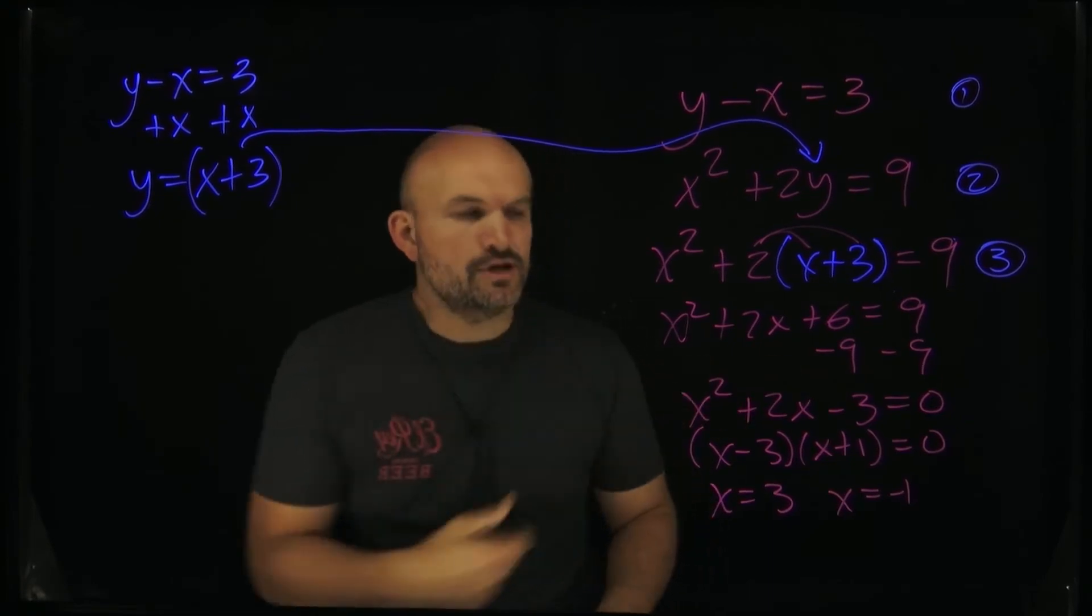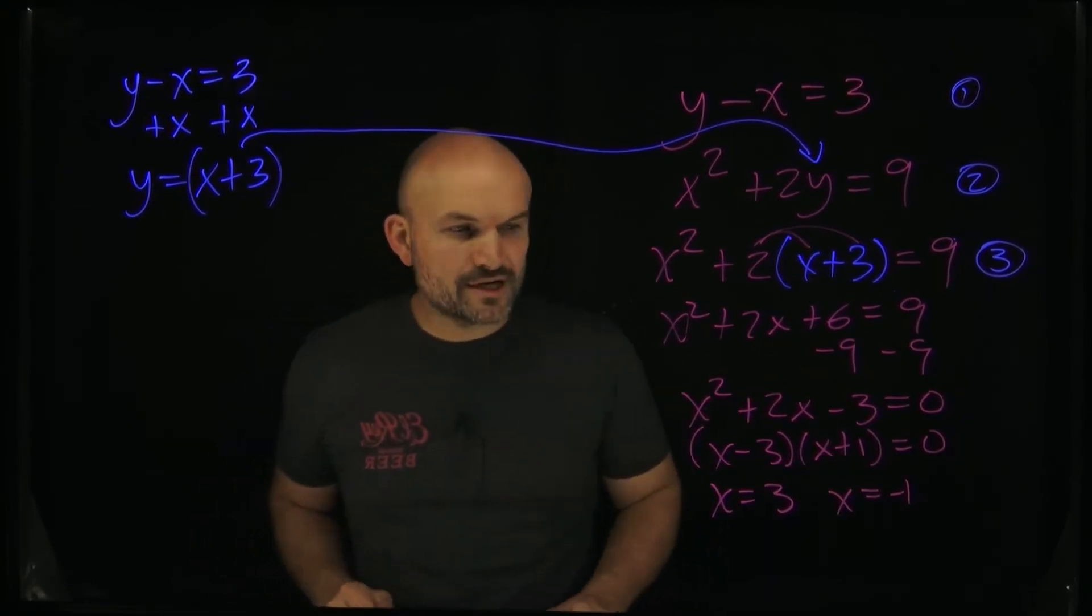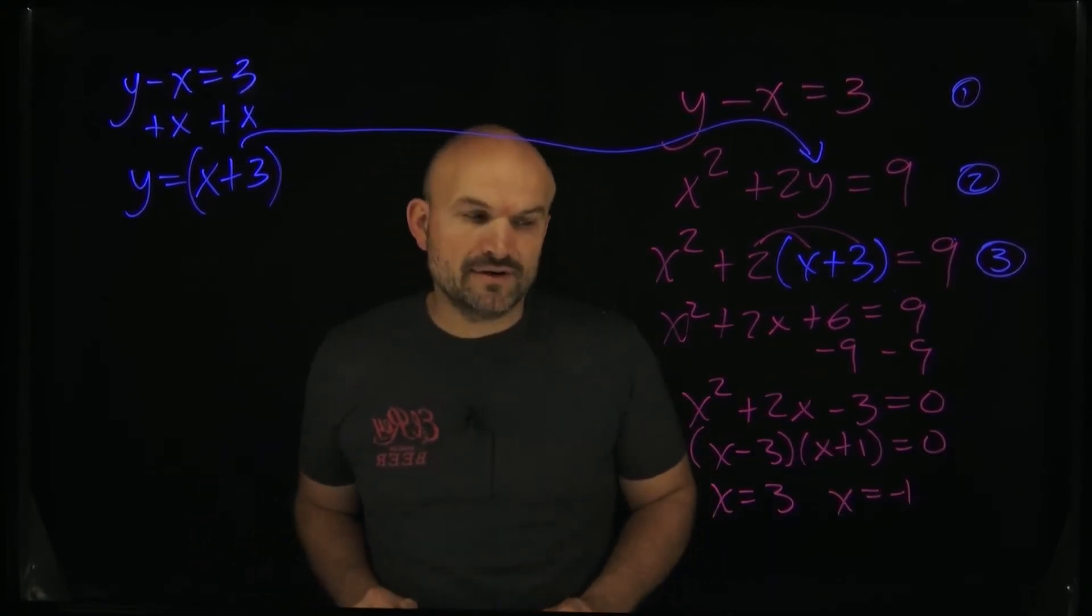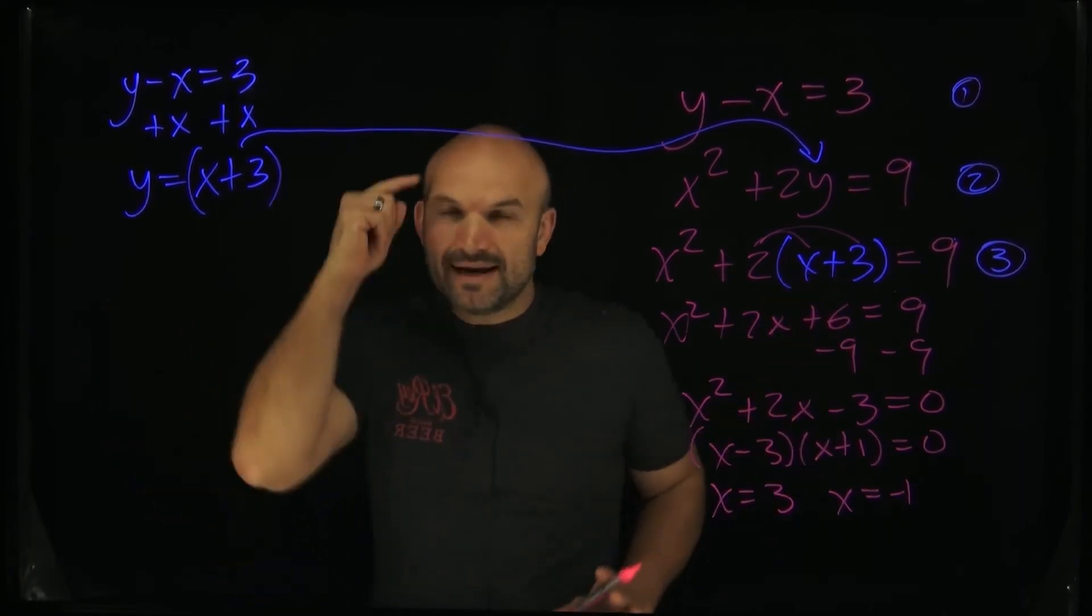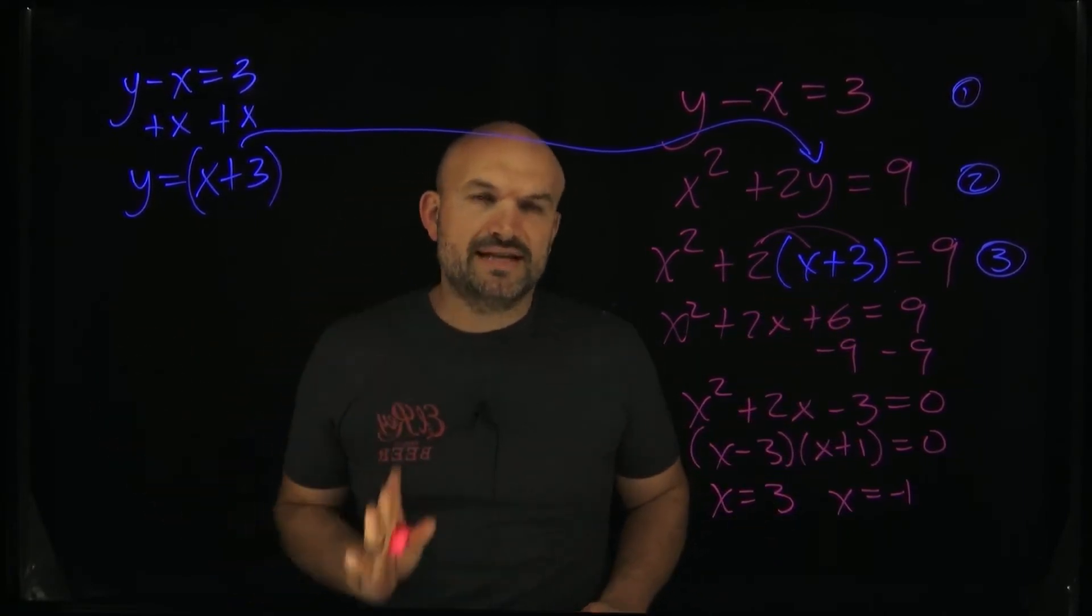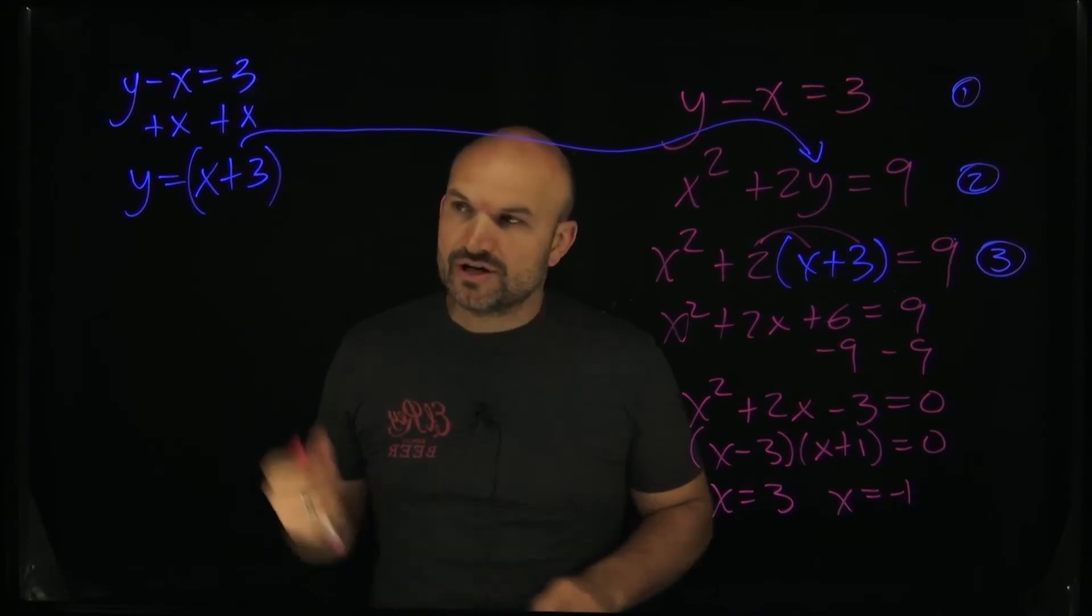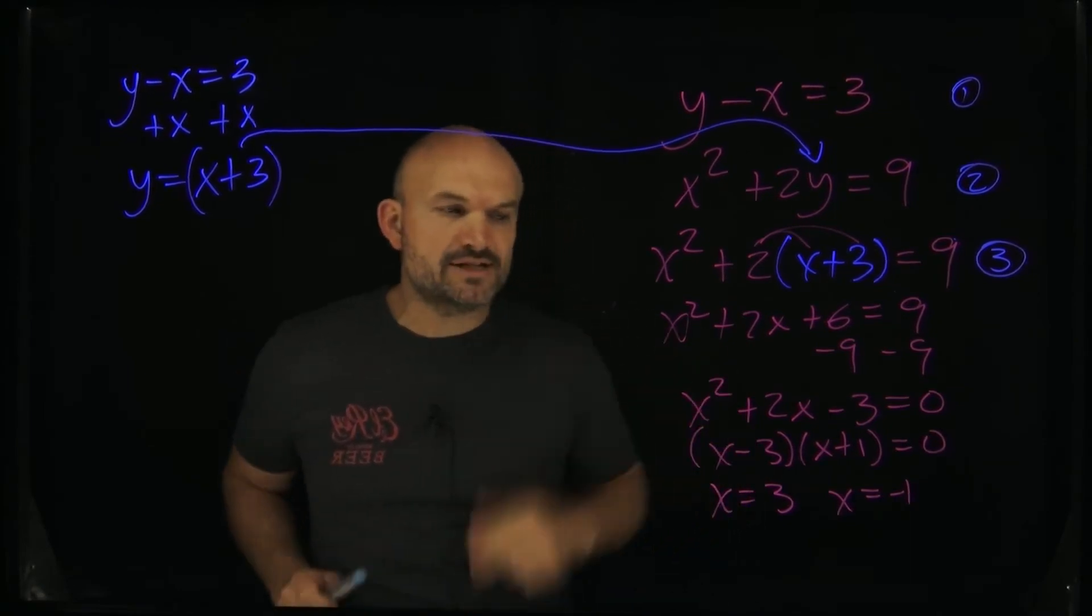OK. So now what I did is I just used the zero product property, set them both equal to zero, and then went ahead and solved. Now, a lot of times students will say like, OK, I'm done, right? But we've got to think about like, just don't automatically go to the answer. I think understanding the graphical approach of what you're doing when solving simultaneous equations is very important.